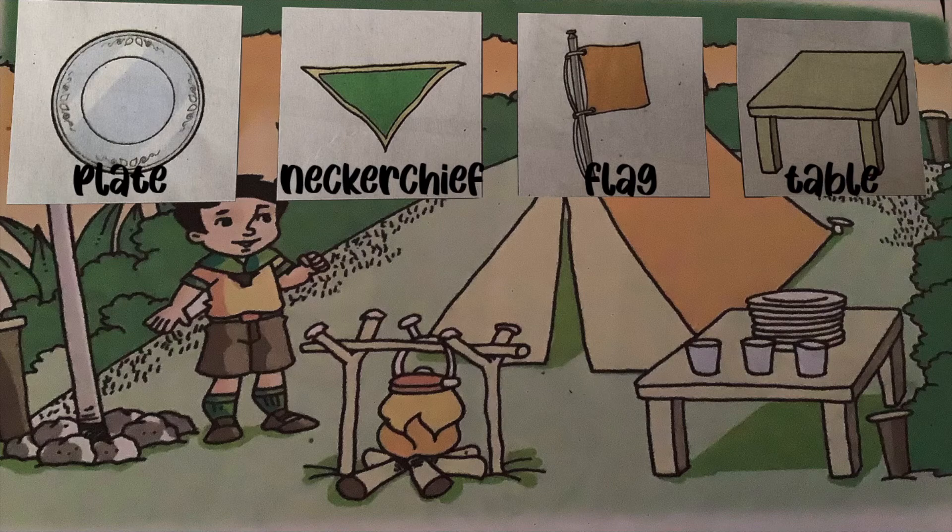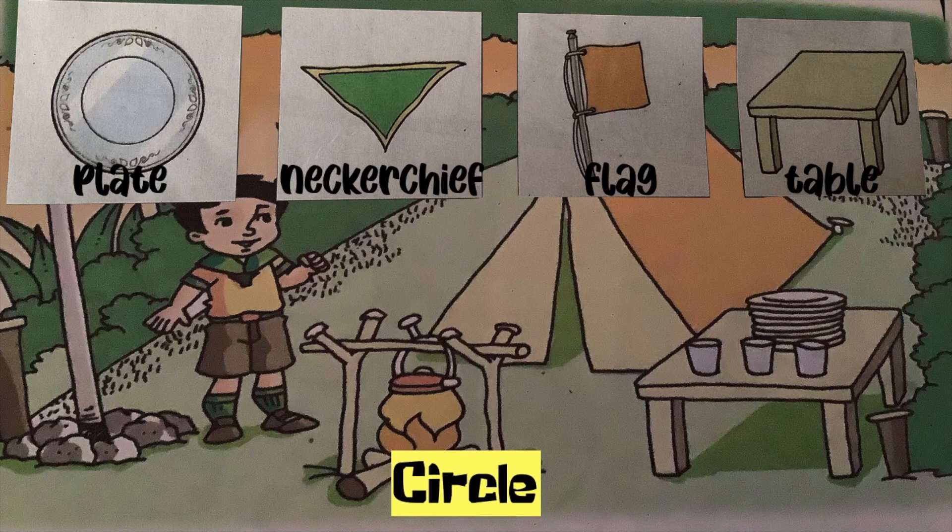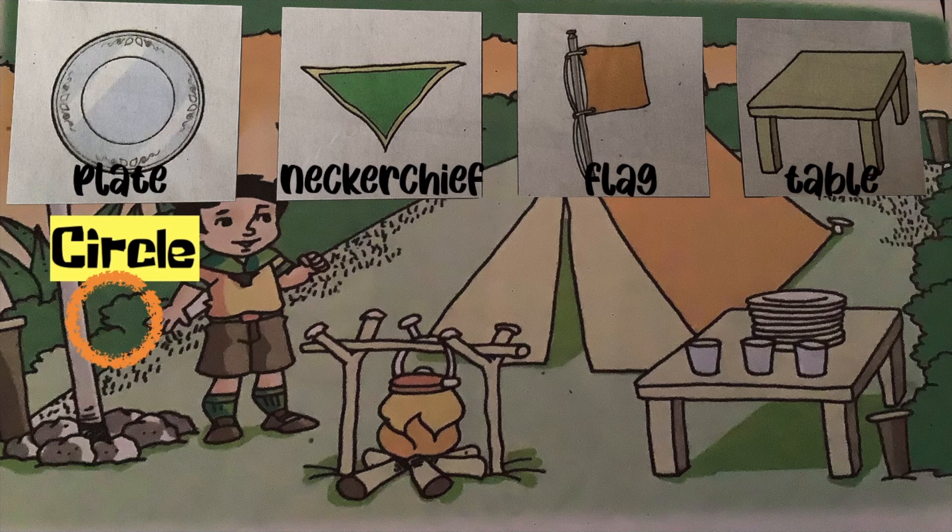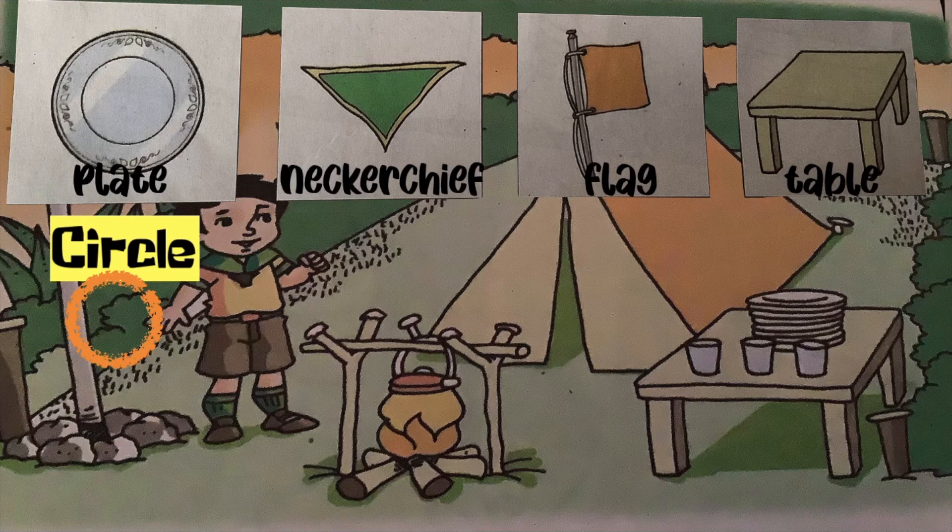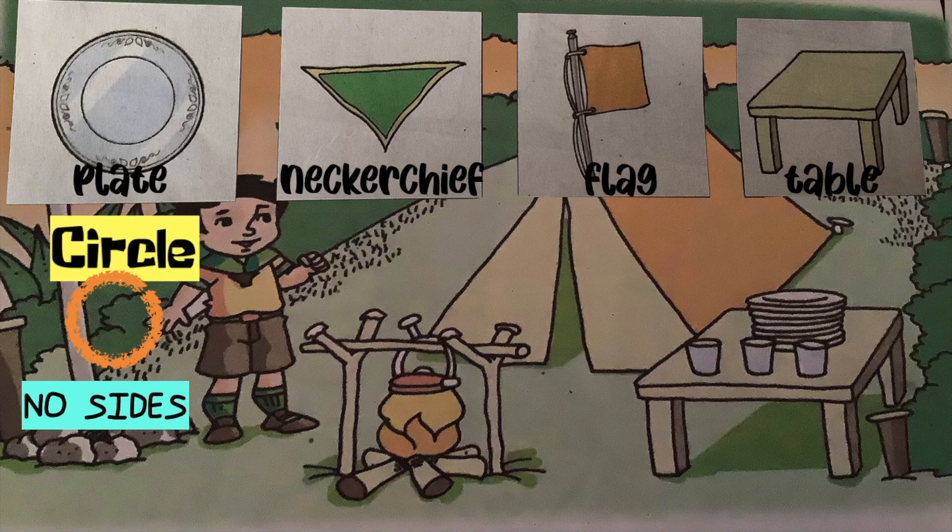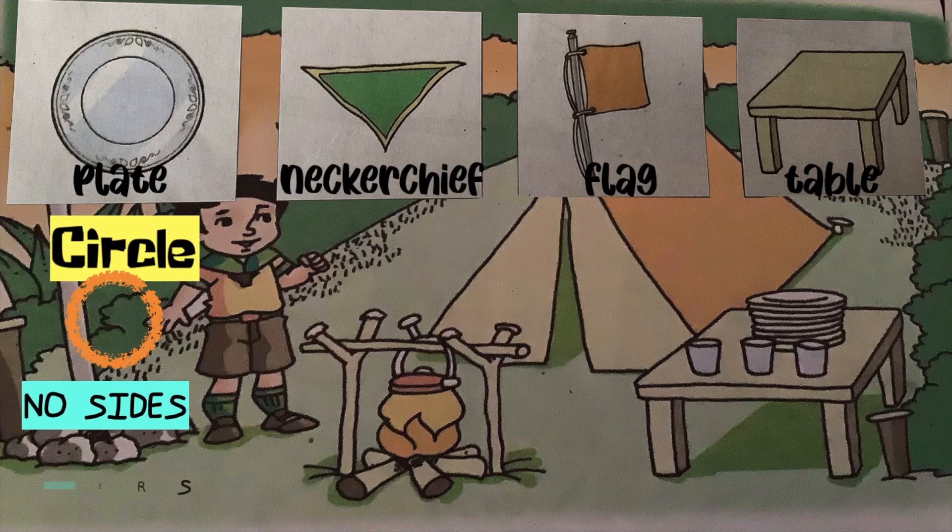Which of the objects drawn shows a circle? That's correct! Plate! How many sides does a circle have? Very good children! The circle has no sides. How many corners does it have? Good job! It doesn't have corners.